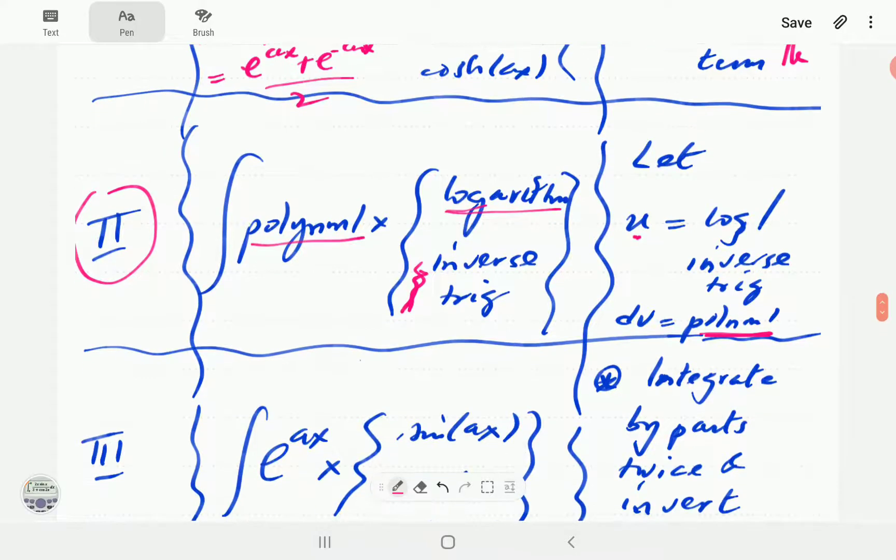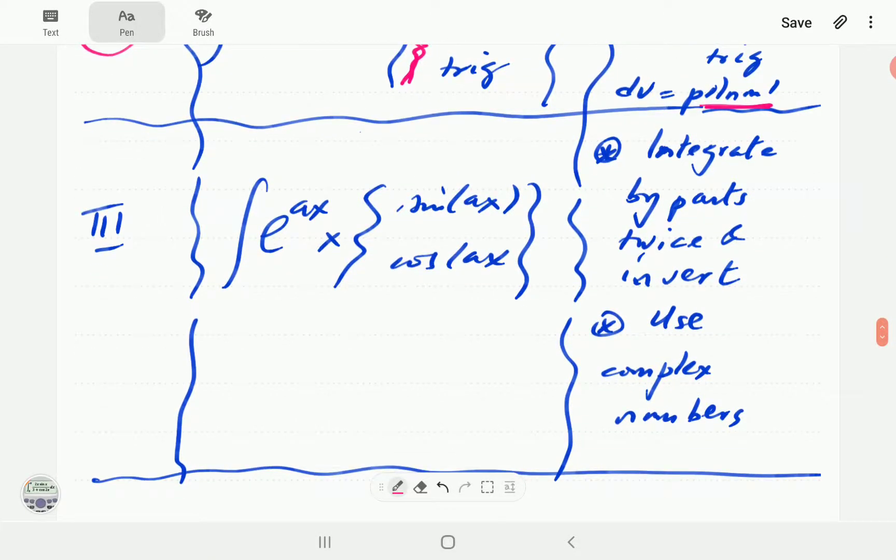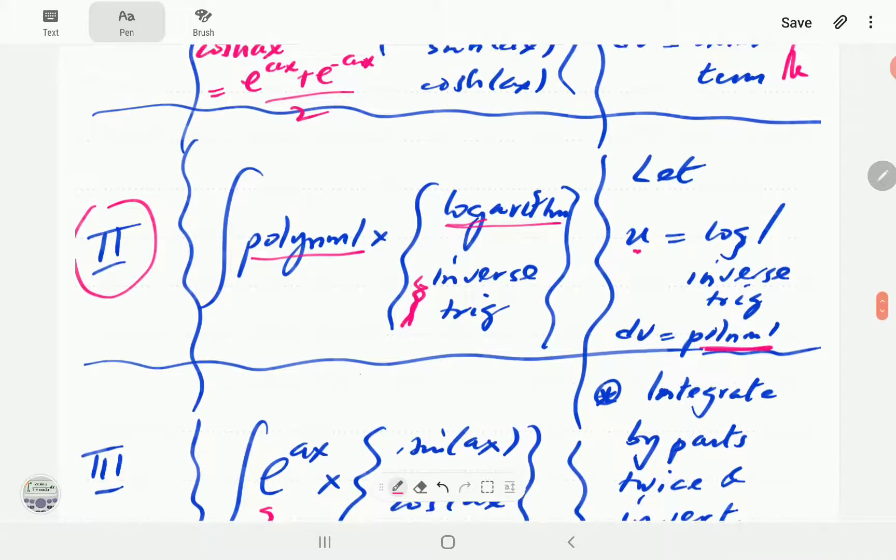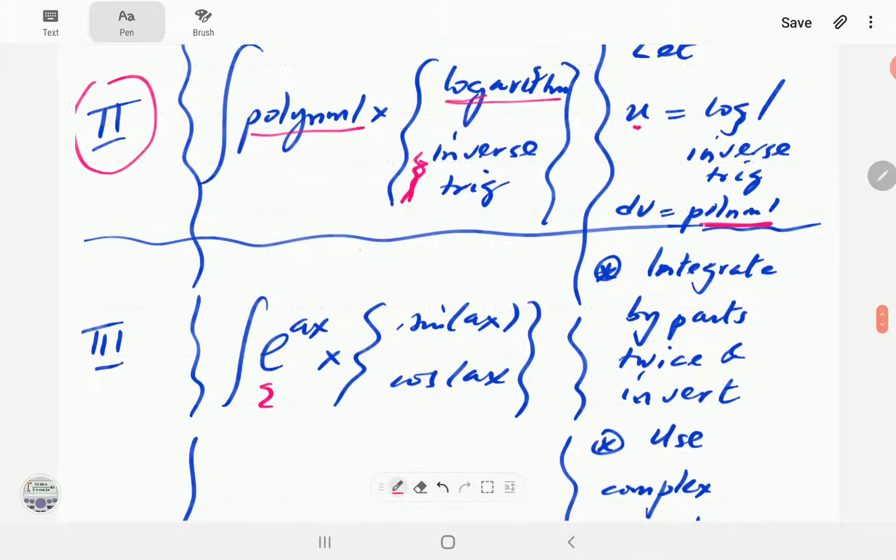The last type of integral we're going to do in this series is integrals of the form where you've got the exponential times sine or cosine. So in this case we've got this multiplying either that or multiplying that one. This time what we do is we integrate by parts twice and then turn the integral inside out or invert it.